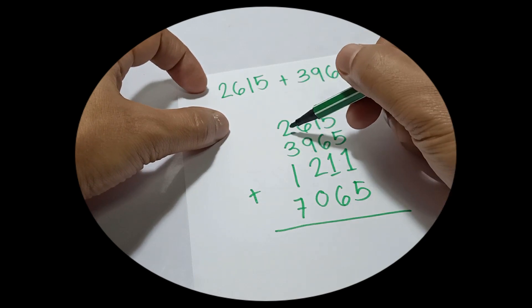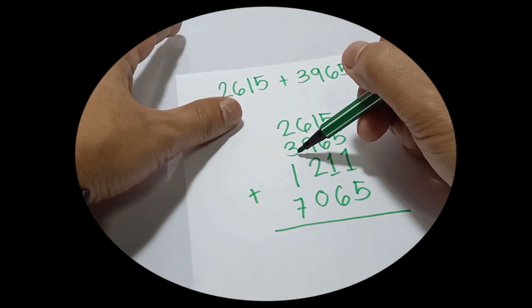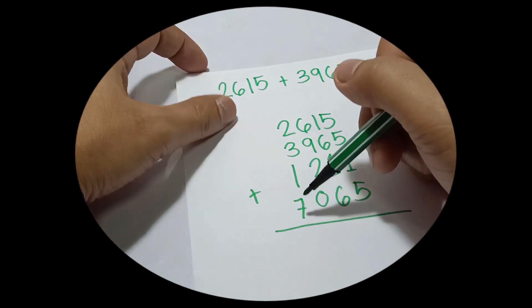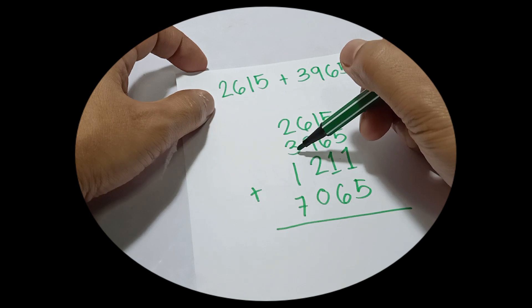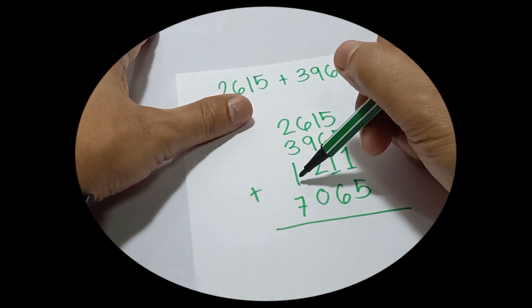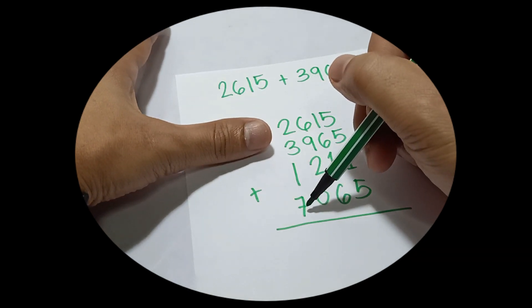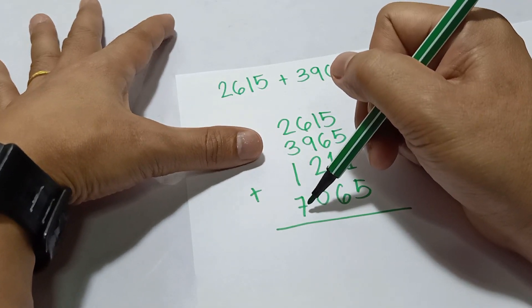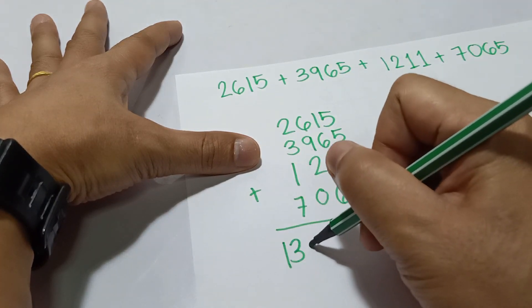Starting with the thousands place: 2000 plus 3000 is 5000, plus 1000 is 6000, plus 7000 is 13000.